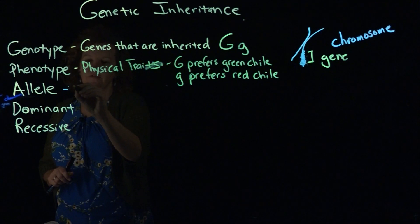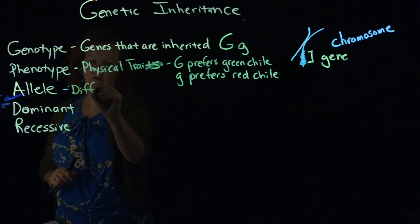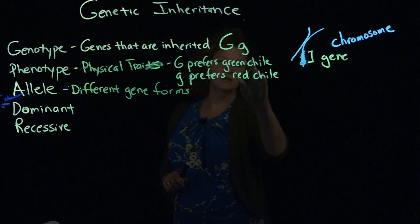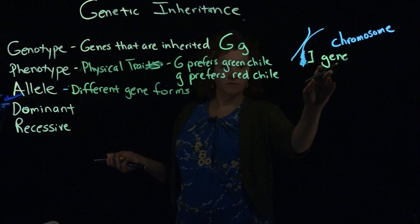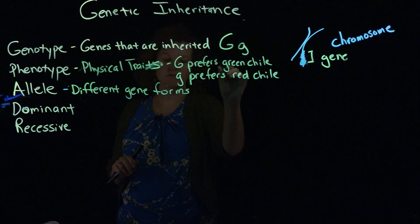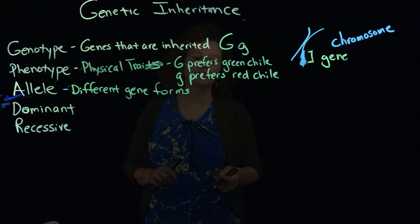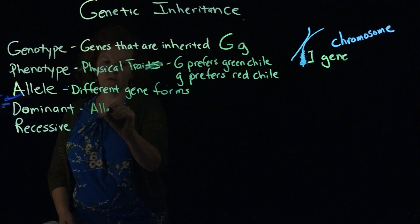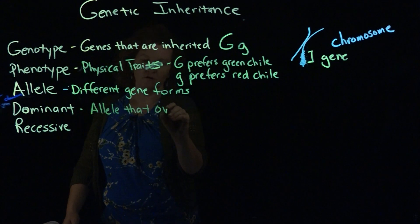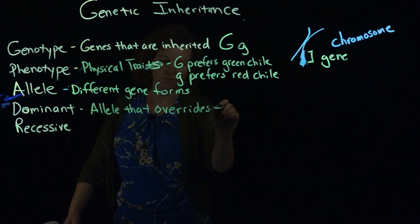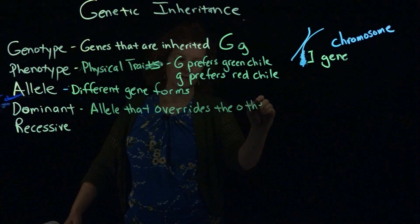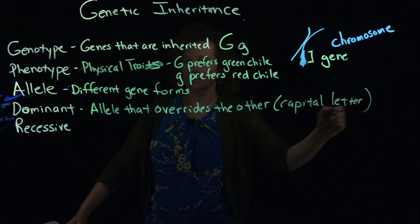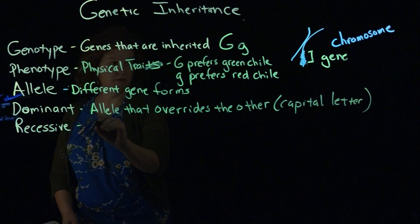The allele refers to different forms of a gene. In this example, the gene codes for chili preference — not specifying which type, just chili preference. The allele types are red or green, and you could add other alleles if there were other chili types. There is also what's called a dominant allele, which is the allele that overrides the expression of the other, and it's typically specified by a capital letter.